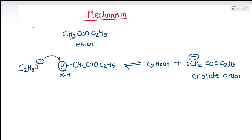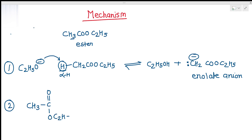The enolate anion has a negative charge and a lone pair of electrons, so it acts as a powerful nucleophile. It will attack an electrophilic position — where there is a deficiency of electrons. Since we have two molecules of ethyl acetate in solution, in Step 2 the enolate attacks the carbonyl group of a second ethyl acetate molecule. The carbonyl carbon is electrophilic — it carries a partial positive charge — while the oxygen carries a partial negative charge.